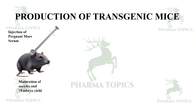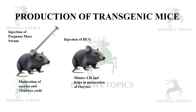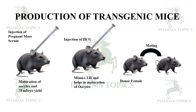The next step is injection of human chorionic gonadotropin (hCG) into the female mouse. The female mouse injected with both PMSG and hCG is then mated with a vasectomized donor male.